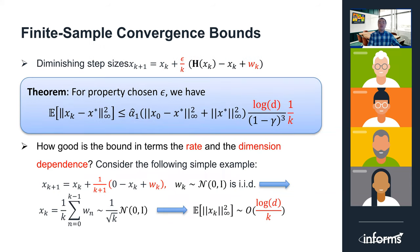Next, we present the result for diminishing step sizes. When using a diminishing step size of the form ε/k with properly chosen ε, we have finite sample bounds with convergence rate 1/k, and dimension dependence of log d. In general, we cannot hope to improve this bound in terms of convergence rate or dimension dependence. To see this, consider the following simple example: let the operator H be identically zero and the noise sequence w_k be i.i.d. standard normal random vectors. Then x_k is just the running average of w_k, which is a normal random vector with mean zero and covariance (1/√k) · I. It follows that the expected sup-norm squared of x_k is of order log d / k. This example demonstrates that our bound is in general tight.